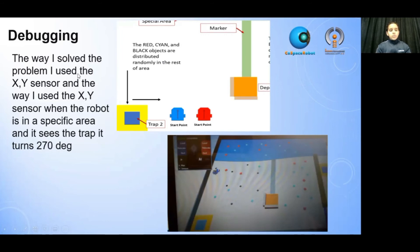The way I solved the problem, I used the X and Y sensor. When the robot is in a specific area and it sees the trap, it turns to 170 degrees like this. Here goes to 170 degrees, 270 degrees. Here's a small example.